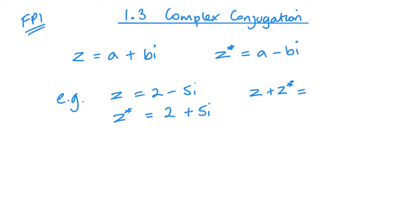If I add my pair of complex conjugate numbers, so 2 minus 5i plus 2 plus 5i, what I get is 2 plus 2 is 4, and my minus 5i plus 5i will cancel out. So I get a real value there.